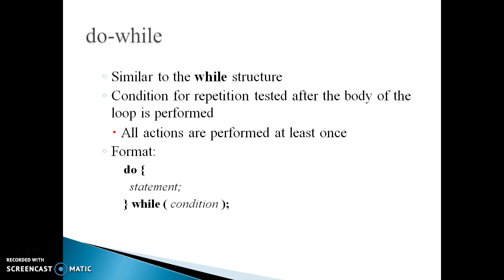The do-while loop is similar to the while loop with one important difference: the body of the do-while loop is executed at least once before checking the test expression. Hence the do-while loop executes at least once — all conditions are performed at least once. The syntax is: first 'do', then in curly braces the number of statements, and after that the while condition is checked. This loop is executed at least once.